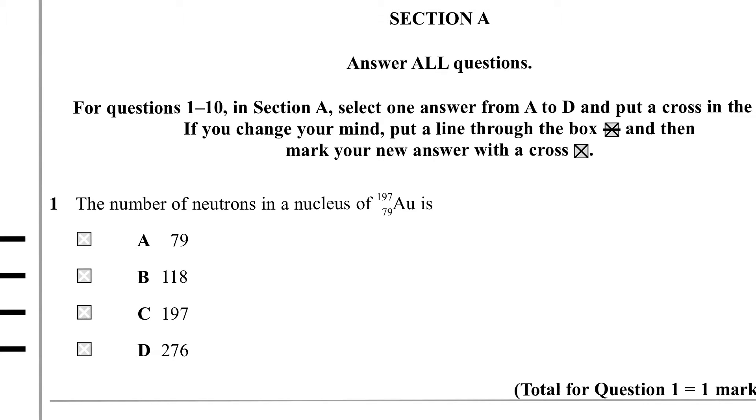Question 1. The number of neutrons in a nucleus of 197/79 gold is how much? Well, we have 79 protons and 197 nucleons. So to get the neutrons we take the 79 off the 197 and that gives us 118, answer B.